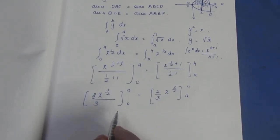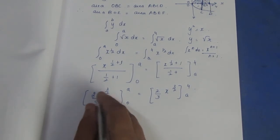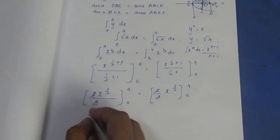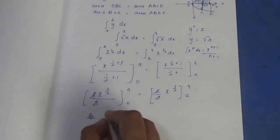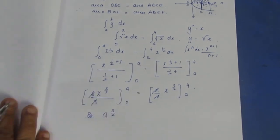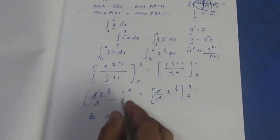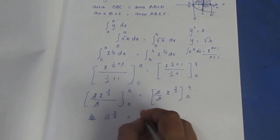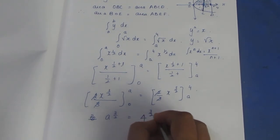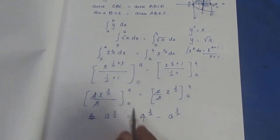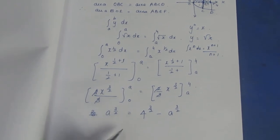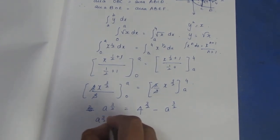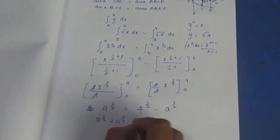This is the upper value minus lower value substituted. The 2/3 cancels from both sides. We get a power 3/2 minus 0 from the first integral, and 4 power 3/2 minus a power 3/2 from the second integral. Setting them equal: a power 3/2 equals 4 power 3/2 minus a power 3/2.